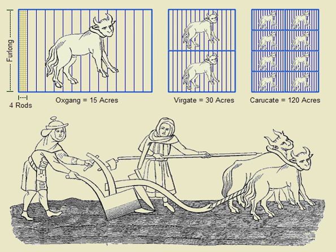One acre equals 1/640th of a square mile, 4,840 square yards, 43,560 square feet, or about 4,047 square metres. While all modern variants of the acre contain 4,840 square yards, there are alternative definitions of a yard, so the exact size of an acre depends upon the particular yard on which it is based.